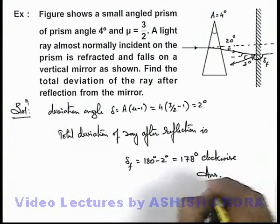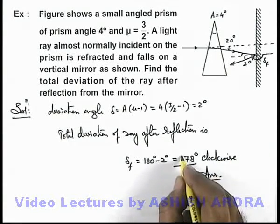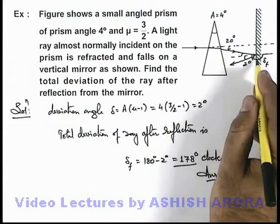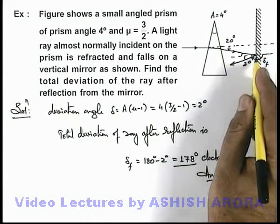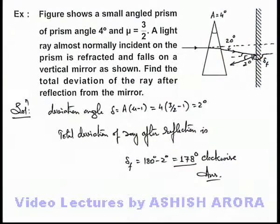This would be the answer to this problem. This is the total deviation of the light ray after reflection from the mirror with respect to the original direction of the incident ray.